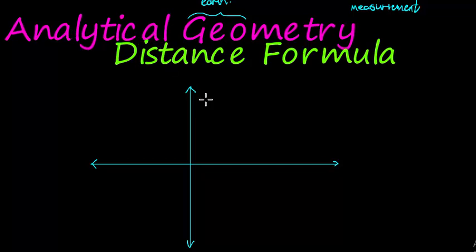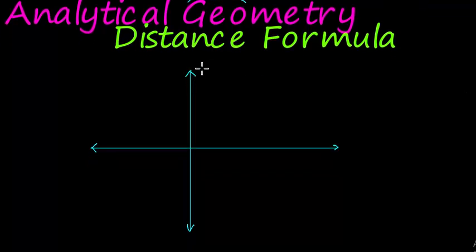For this course, we're going to primarily stay in two dimensions on the Cartesian plane. We have a Y measurement, a vertical measurement, and a horizontal measurement called X, and we're going to express everything in terms of X and Y. The distance formula represents the distance between two points.